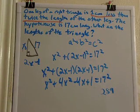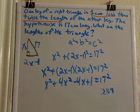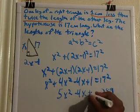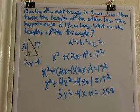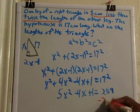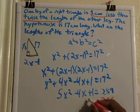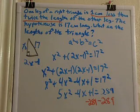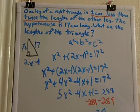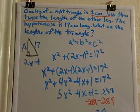If I combine my like terms on the left-hand side, I'll get 5X squared. And then next I want to do what? Well, if I'm trying to get a quadratic equation, I need everything to be equal to 0. So I'm going to subtract the 289 from both sides. And so what I'll be left with on the right-hand side is just a 0, and on the left-hand side I'll have 5X squared minus 4X minus 288.